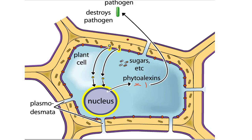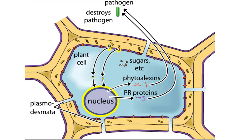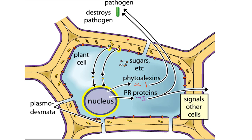Some of the genes that are expressed code for proteins called pathogenesis-related, or PR proteins. Some PR proteins kill bacteria or fungi by breaking down their cell walls. Others may travel through intercellular passageways called plasmodesmata, and serve as alarm signals to neighboring, uninfected cells.